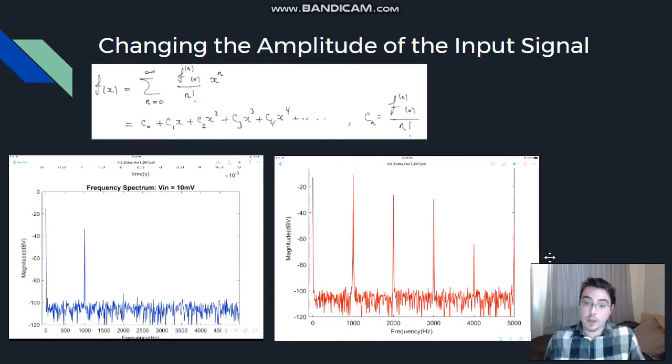So, what will happen when we change the amplitude of this input signal? If it's a very low amplitude, such as 10 millivolts here, what's going to happen is we have a spike, a delta spike, at the frequency that we're running it over. In this case, our frequency response is set to 1 kilohertz, and so we have a spike at 1 kilohertz and obviously a DC response as well, a DC component.